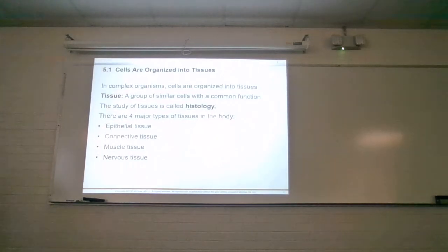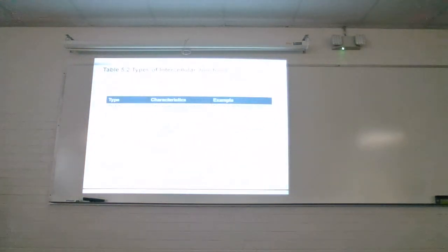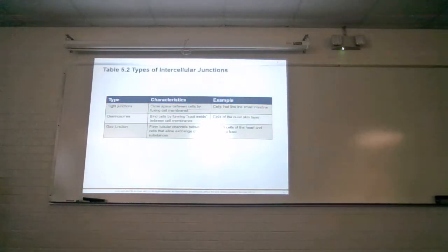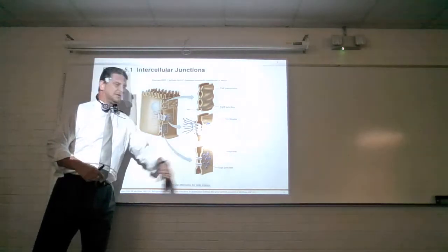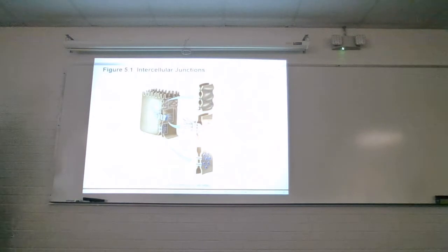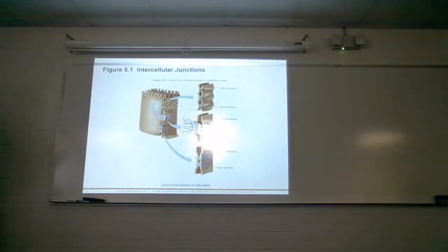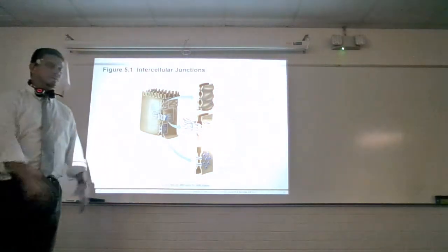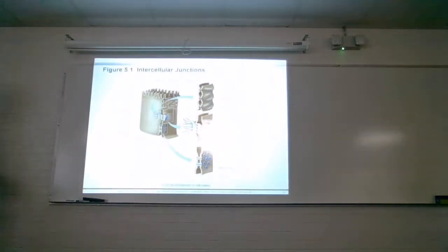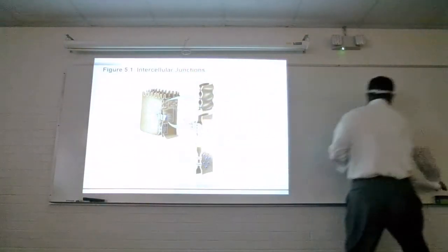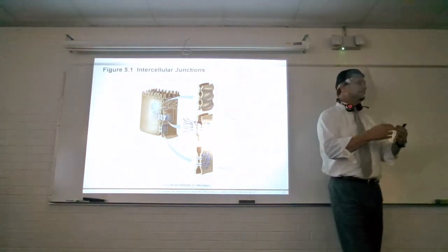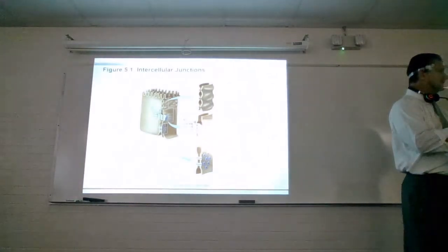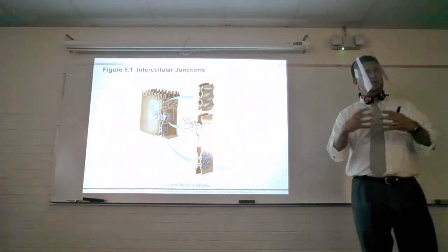One of the first things we see is connections between tissues. There are three types of connections you need to know. Starting at the bottom, gap junctions are areas where there's an actual hole between two cells. They allow for communication and allow the cytosol to go back and forth. We'll see that these are found in intercalated discs in cardiac muscle cells, allowing all cells to work as one unit.